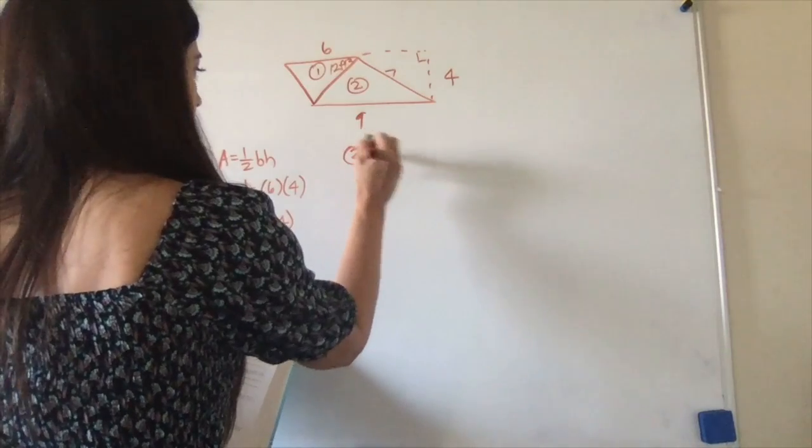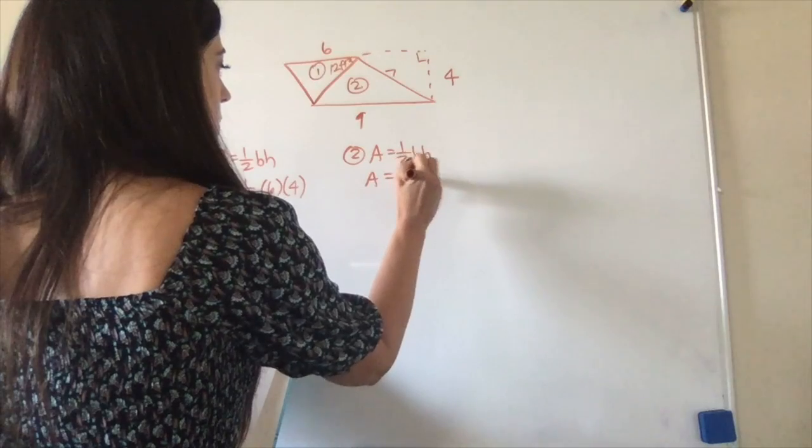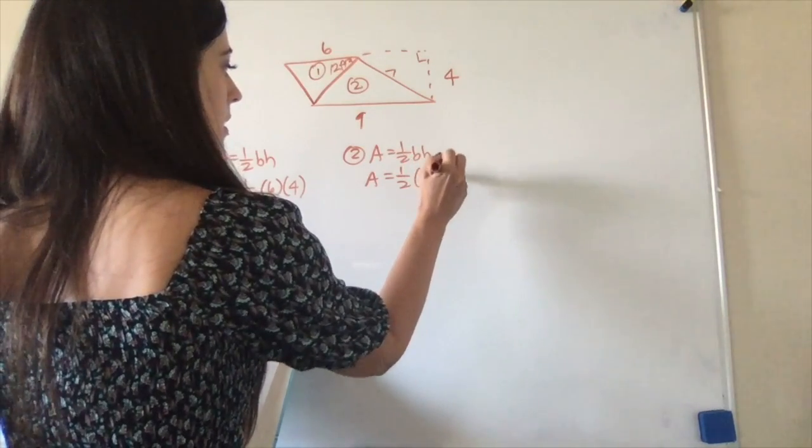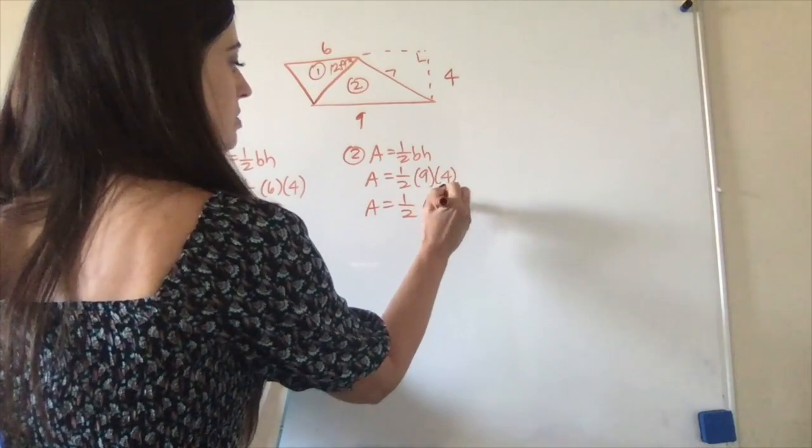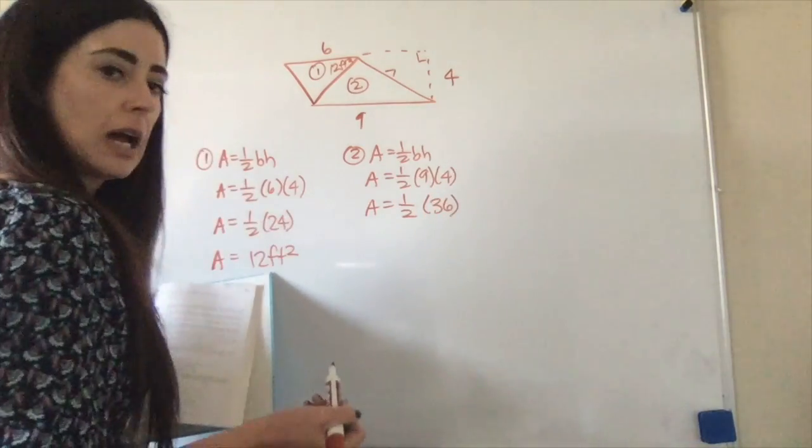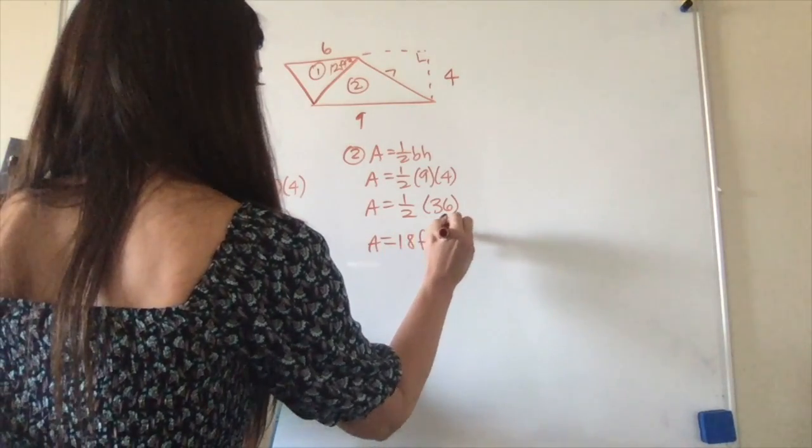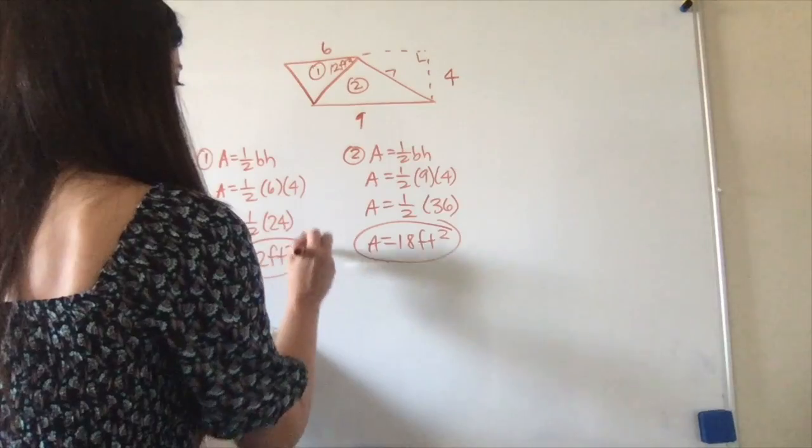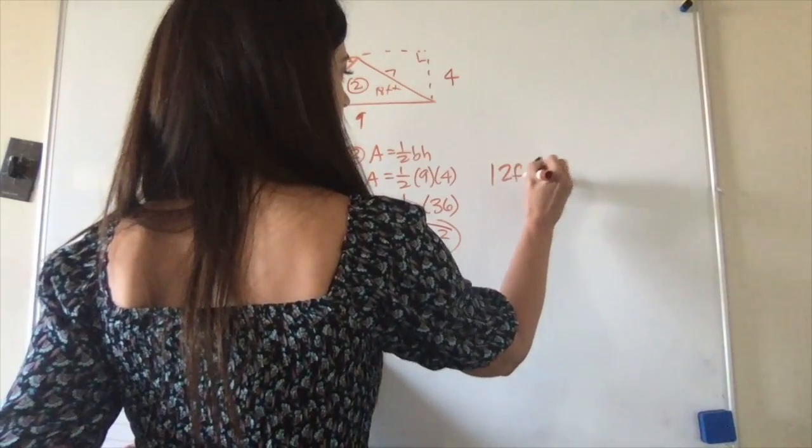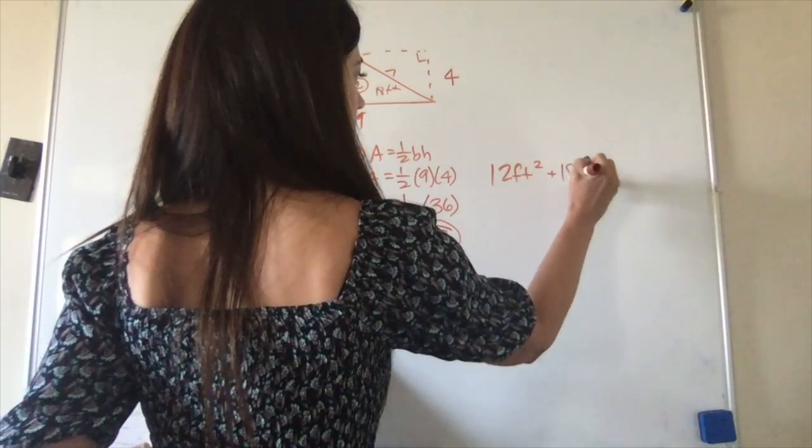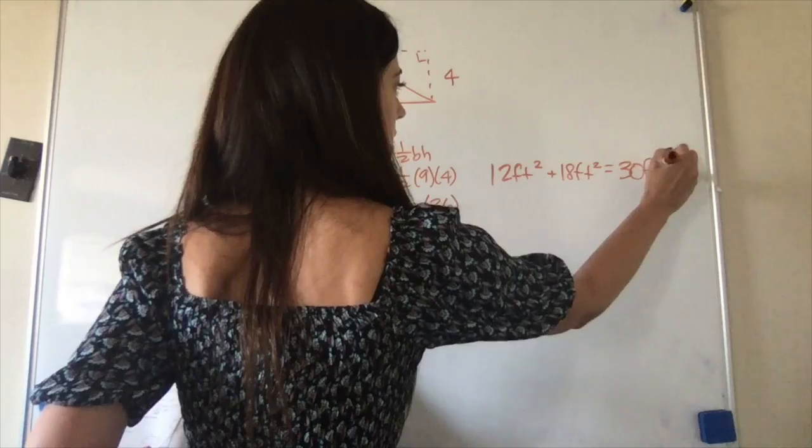Now, for my second one, area equals one-half base times height. Area equals one-half, 9 times 4. Area equals one-half, 9 times 4 is 36. Half of 36 is 18 feet squared. I have 12 and 18. 12 feet squared plus 18 feet squared equals 30 feet squared.